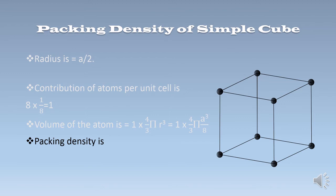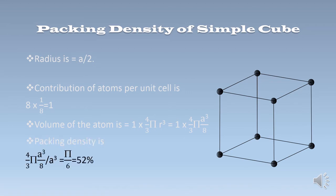What is the packing density or atomic packing factor? It equals the volume of atoms divided by the volume of the unit cell. The volume of the unit cell is A³. So the packing density is (4/3)π(A/2)³ divided by A³, which simplifies to π/6, equal to approximately 52%. So for a simple cube, the packing density is 52%, meaning 52% of the total unit cell volume is occupied by atoms.